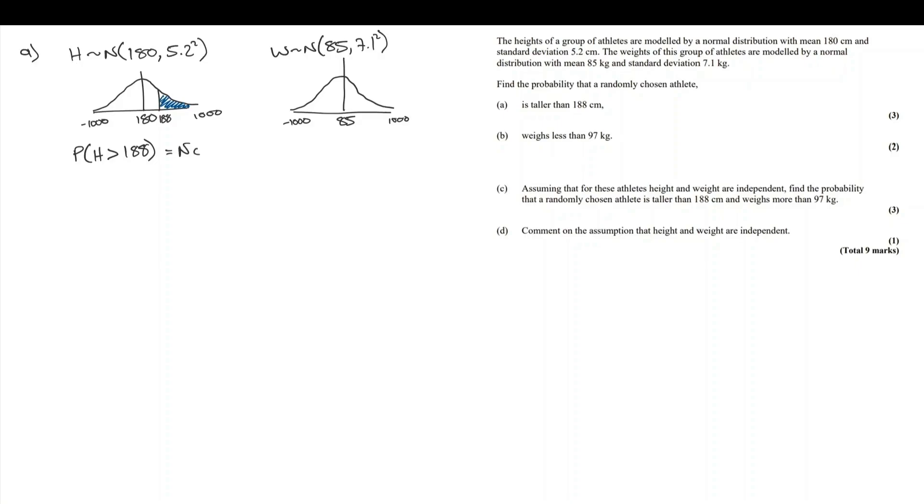We can use the NCD cumulative normal distribution calculation. The minimum we're interested in, 188. The maximum we're interested in, 1000. Standard deviation and the mean. Our calculator gives us an answer of 0.062. And, as we expected, this is a small probability, smaller than 50%.